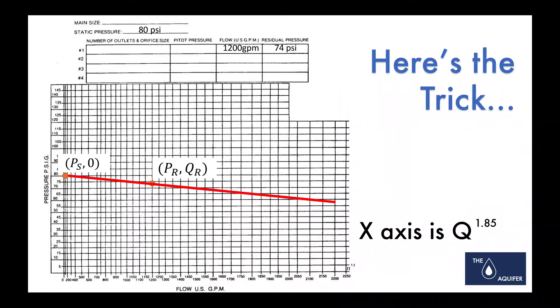And it's like, well, what do we know about this thing? Here's the trick. The trick is, and this took me forever to figure out, is this axis is not a normal XY axis. It's with Q raised to the 1.85 power. So you have to consider that when you're doing this thing.